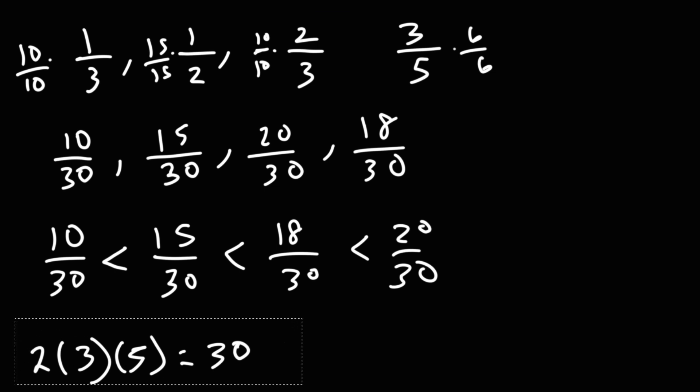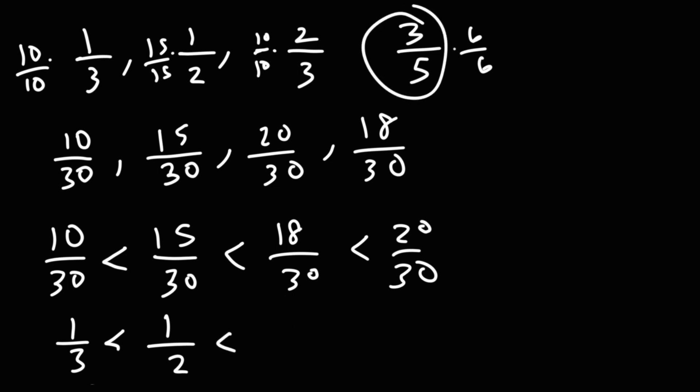So now I'm going to rewrite the original problem, but in a proper order. So 10 over 30, we got that from 1 over 3. 15 over 30, that came from 1 over 2. 18 over 30, it came from the last fraction, 3 over 5. And 20 over 30 came from 2 over 3.